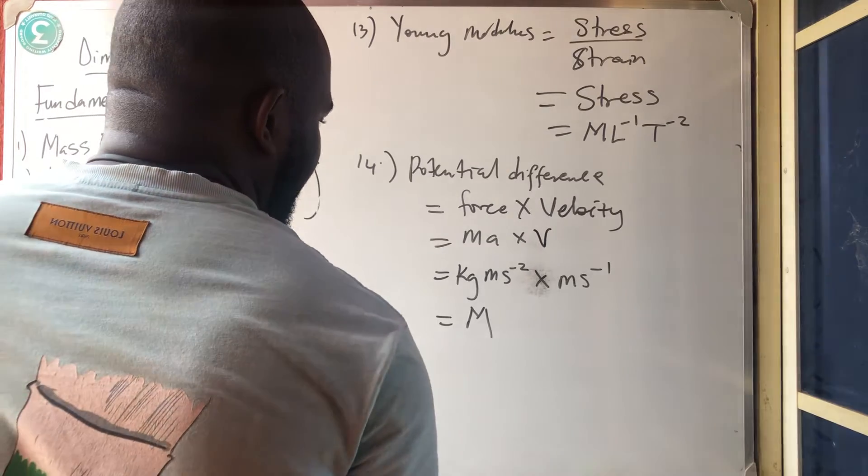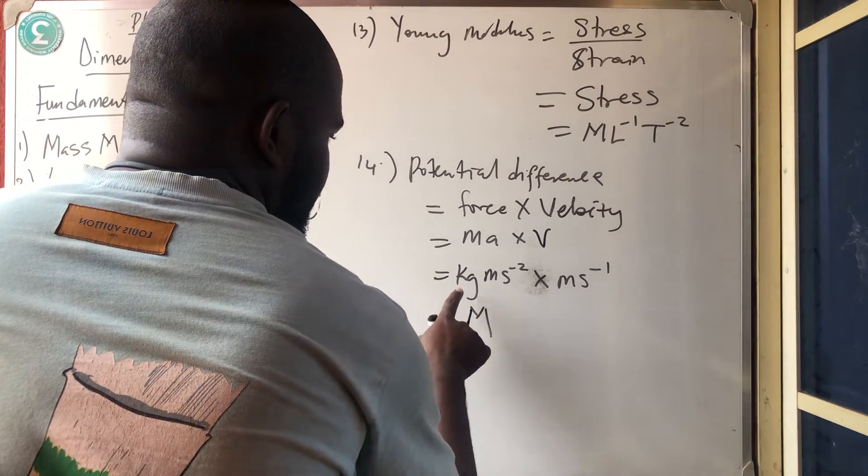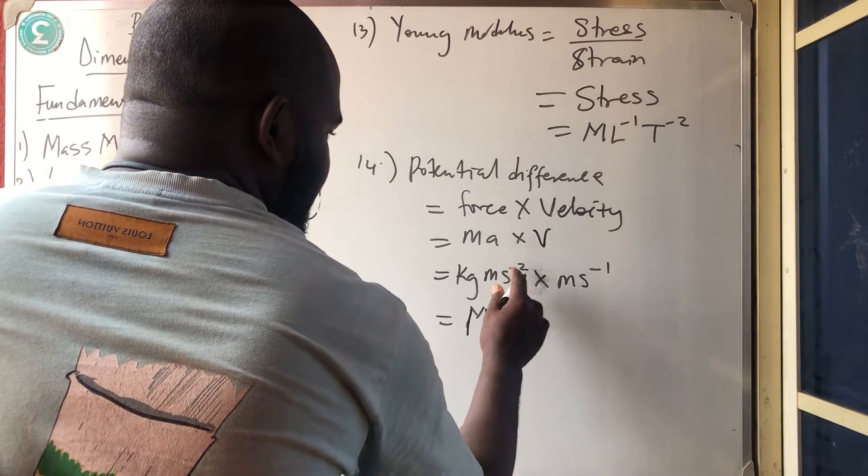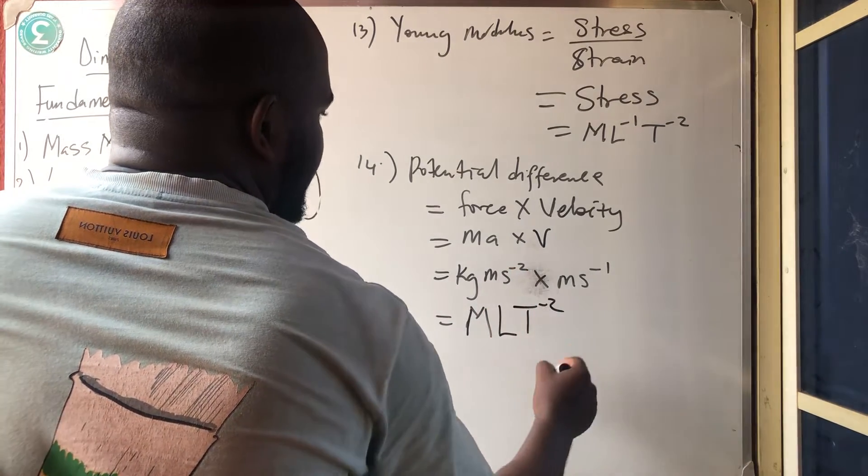So what do we have now? We are having that capital letter M, that is kilogram is mass m, meter is what? Length. Second is what? Time.